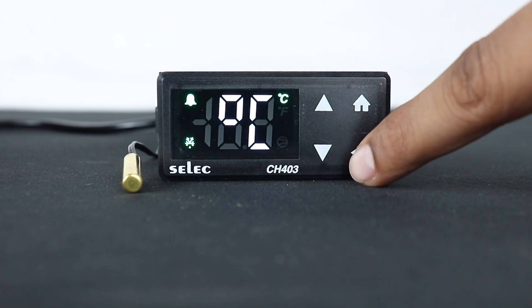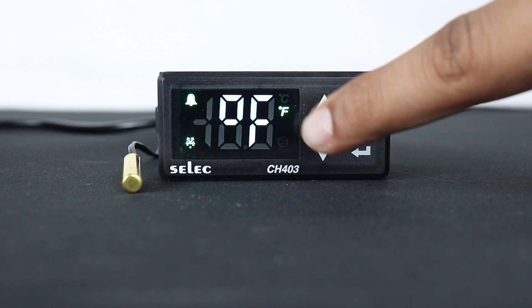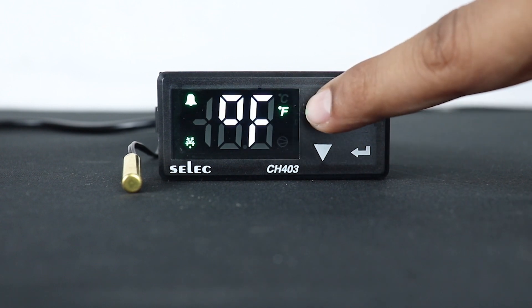Going further, we have parameter PU, which helps to change temperature unit from degree Celsius to degree Fahrenheit.